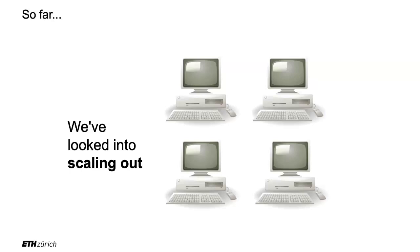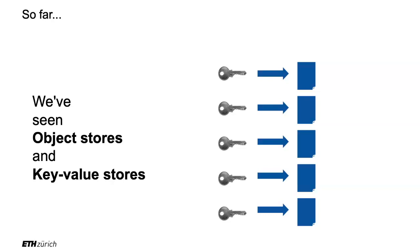We looked into scaling out — the idea that instead of a single machine, you now have a whole cluster of machines. We saw that while scaling out, we can store a very large number of objects or key-value pairs. Note that the key-value model applies to both object stores and key-value stores — both S3 and Dynamo use the key-value model. However, when you say 'key-value store,' you really mean the one with low latency and smaller values. People would not call S3 a key-value store because the objects are too large, but it still has a key-value model.